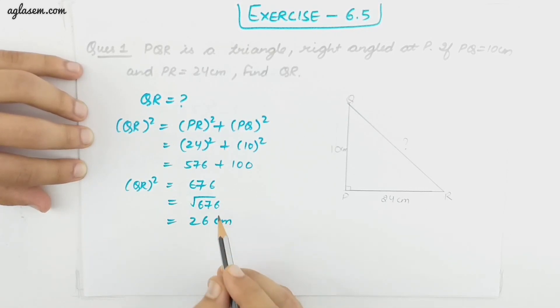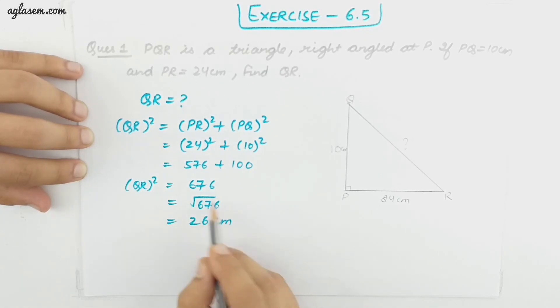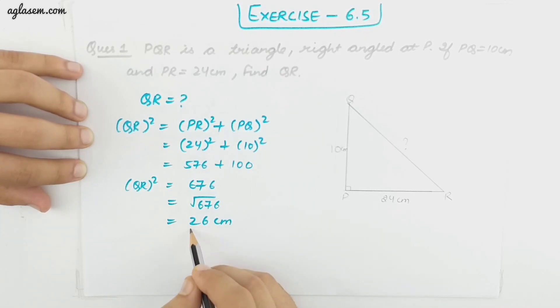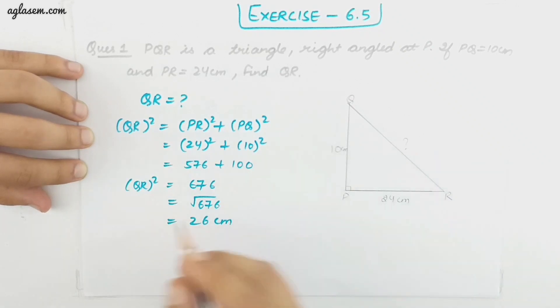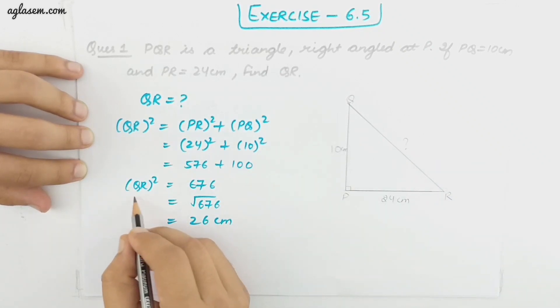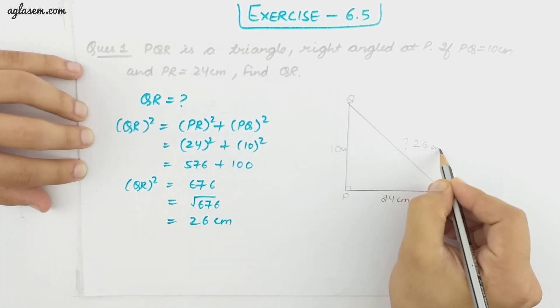676 is the square of 26. If we divide 676 by 26 we get 26. So QR is 26 centimeter.